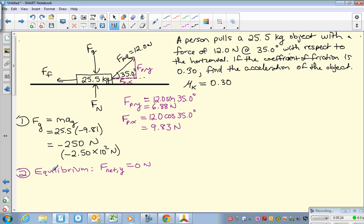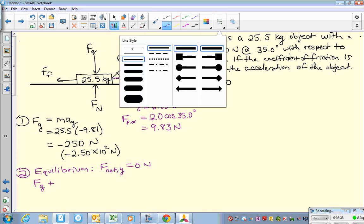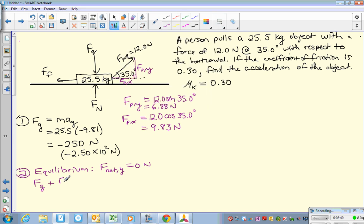So what are the forces in the y direction? I have gravity. We have the force of the pull in the y component. We also have the normal force. So all three of those have to add up to zero. So gravity, that was negative 250. The pull in the y direction is up, so it's positive, and that's 6.88, so it's very small compared to gravity. And then we have our normal force.